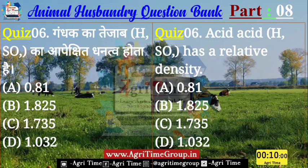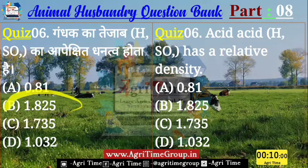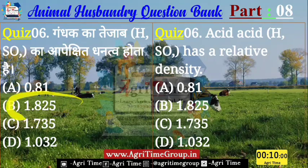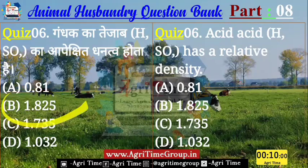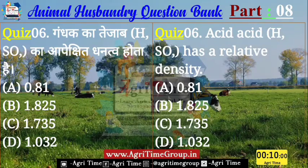Time up होता है। Quiz number 6 का जिन्होंने B answer comment किया है — यानि कि 1.825 — उन सभी का answer right है। गंधक के तेजाब का जो specific gravity होता है, वो option B, 1.825 होता है। चलिए बढ़ते हैं अगले question की ओर।